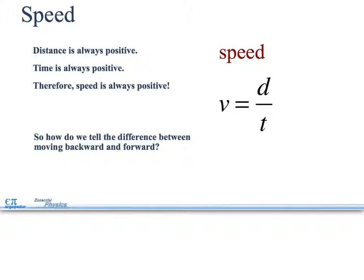For speed, distance is always positive. Time is always positive. Therefore, speed is always a positive number. So how do we tell the difference between moving backwards and moving forwards? We need a new variable, which is velocity. So speed will always be a positive number, where velocity we can end up with negative numbers, showing that we're going backwards.